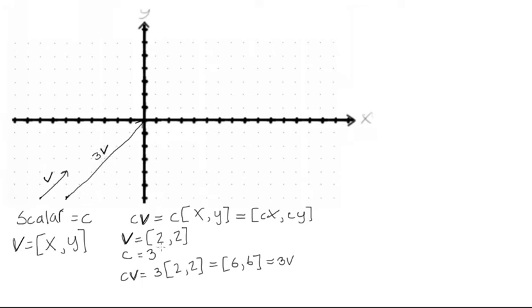So, you'll notice that when we multiply this vector v by 3, by the scalar 3, it actually just got 3 times as long. So, you can say we scaled it by a factor of 3.